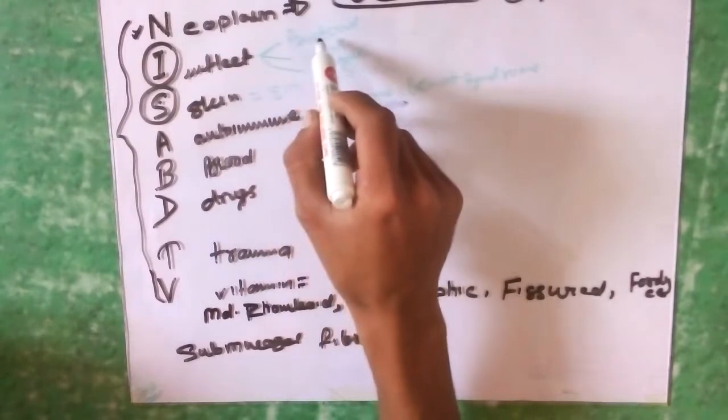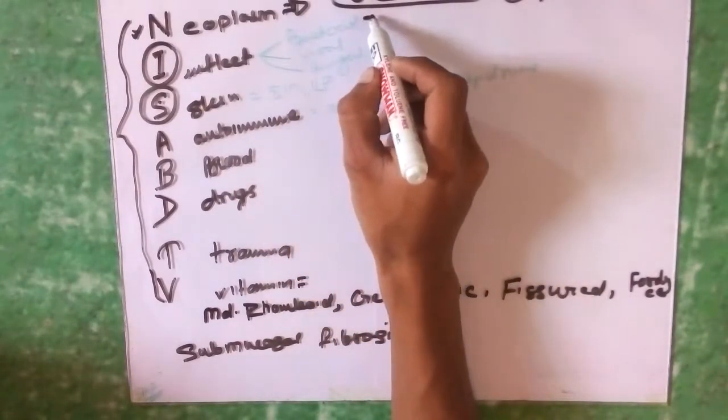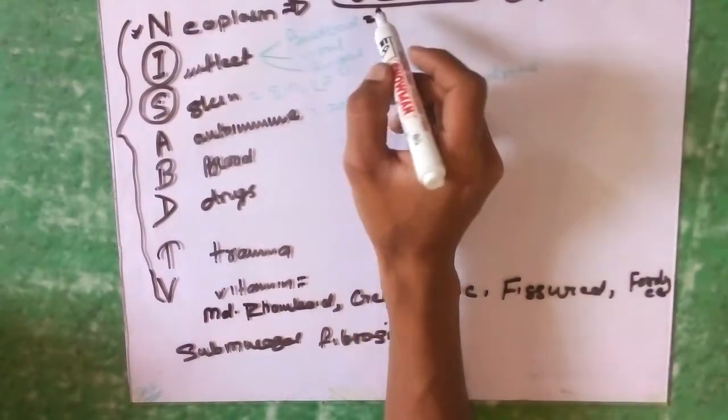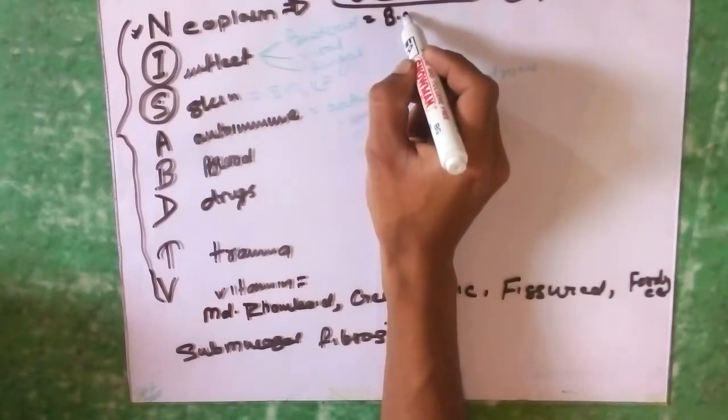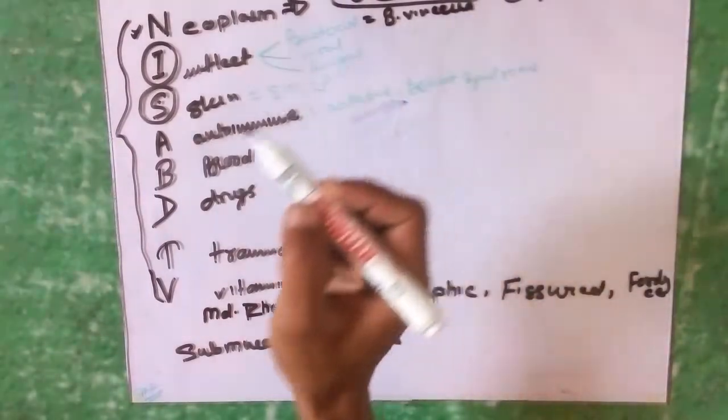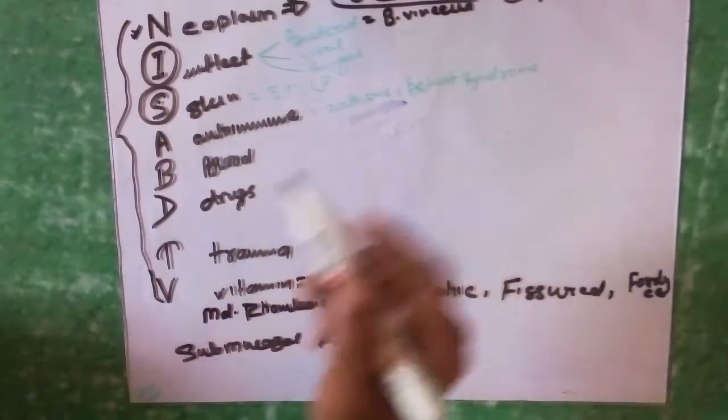Regarding infection, it is divided into bacterial infection, viral infection, and fungal infection. What bacteria cause oral ulcer? Borrelia vincenti. Borrelia vincenti can be treated with penicillin, erythromycin, or metronidazole.